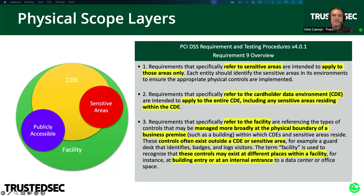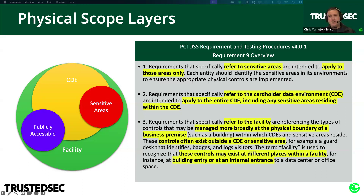These physical security requirements right at the top of requirement 9 state they only apply to areas in those categories. Facility is the most complex because PCI tells us things managed more broadly often exist outside of a CDE or sensitive area, may exist at different places within a facility — building entry or at an internal entrance. This gives you a lot of flexibility in how you implement any controls that refer to the facility. Maybe it's at the front door of the building, maybe at an interior door to a protected space, maybe somewhere in between — that's up to you, as long as it's somewhere.